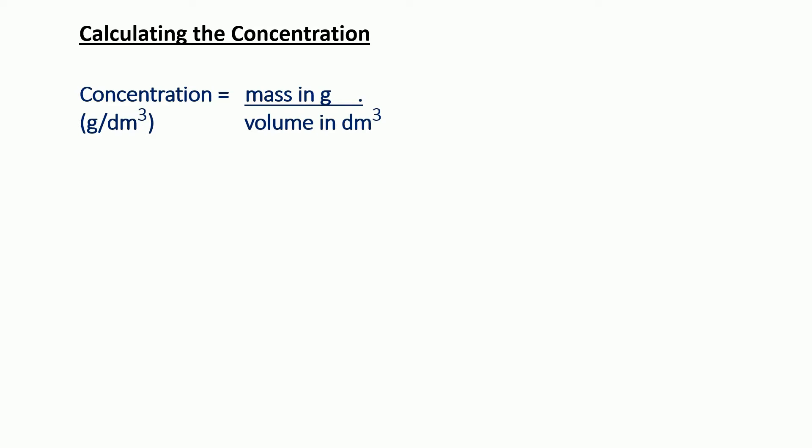So how do we actually calculate the concentration? The main equation you need to remember is: concentration equals the mass in grams divided by the volume in dm cubed. One dm cubed is one litre — imagine a water bottle with a litre of water. The unit for concentration is g per dm cubed, because we've got grams at the top divided by dm cubed at the bottom.